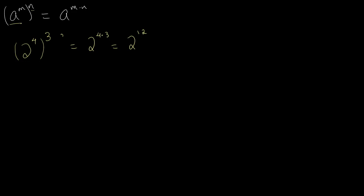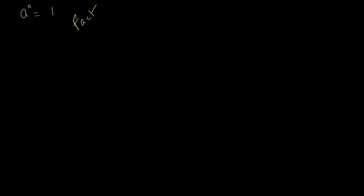The next law of indices is where anything is taken to the power of zero. This law can't necessarily just be explained — we kind of just have to take it as a fact. Any number a to the power of zero is equal to one. For example, two to the power of zero equals one, 1,273 to the power of zero equals one, and negative 2.530 to the power of zero equals one. Any number to the power of zero will always equal one.